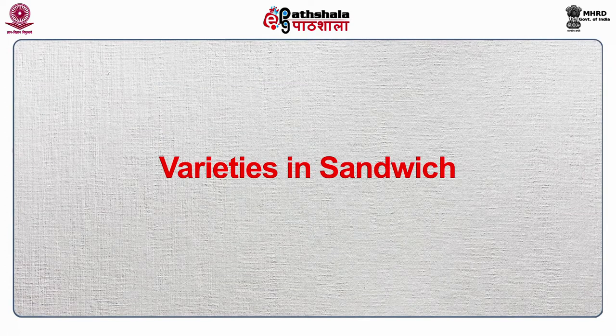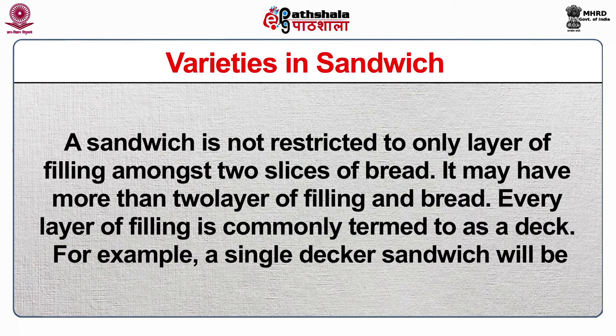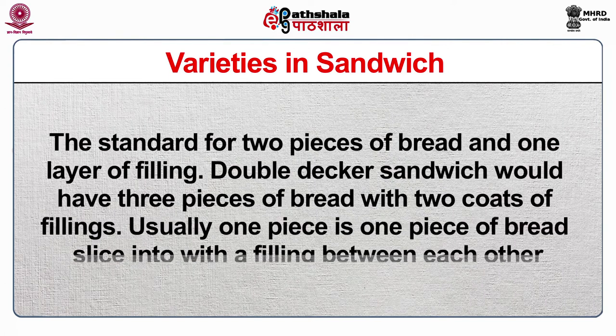A sandwich is not restricted to only one layer of filling between two slices of bread — it may have more than two layers. Every layer of filling is commonly termed a deck. A single-decker sandwich is the standard with two pieces of bread. A double-decker sandwich has three pieces of bread with two coats of filling, like a double-decker British bus. A clasp sandwich is a double-decker with chicken, bacon, ham and pork.